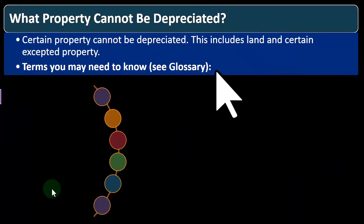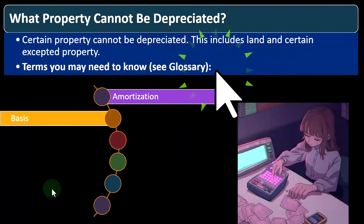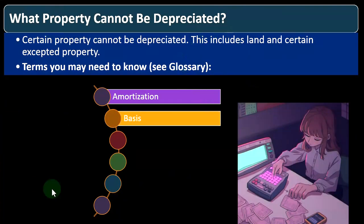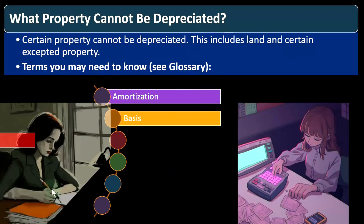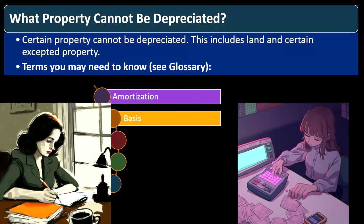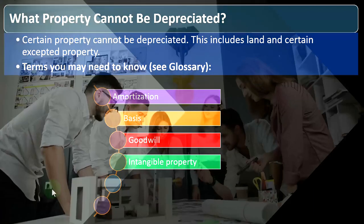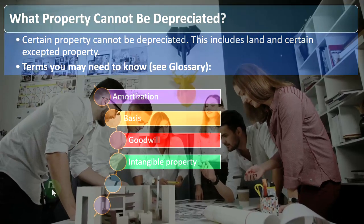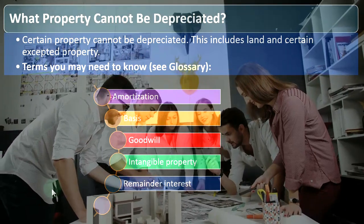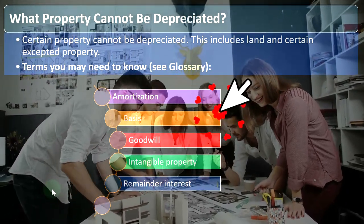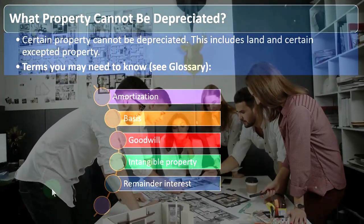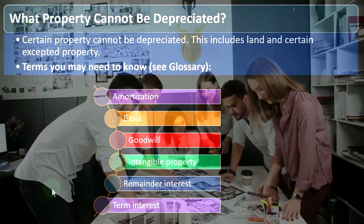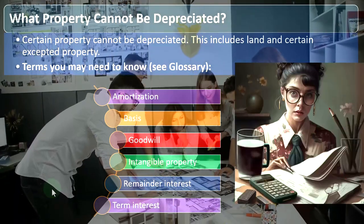Some terms you may need to know from the glossary: amortization — similar to depreciation, amortizing over time; basis — essentially the cost of the property; goodwill — an intangible concept; intangible property — you can't touch it, but it still has value; and remainder interest and term interest.